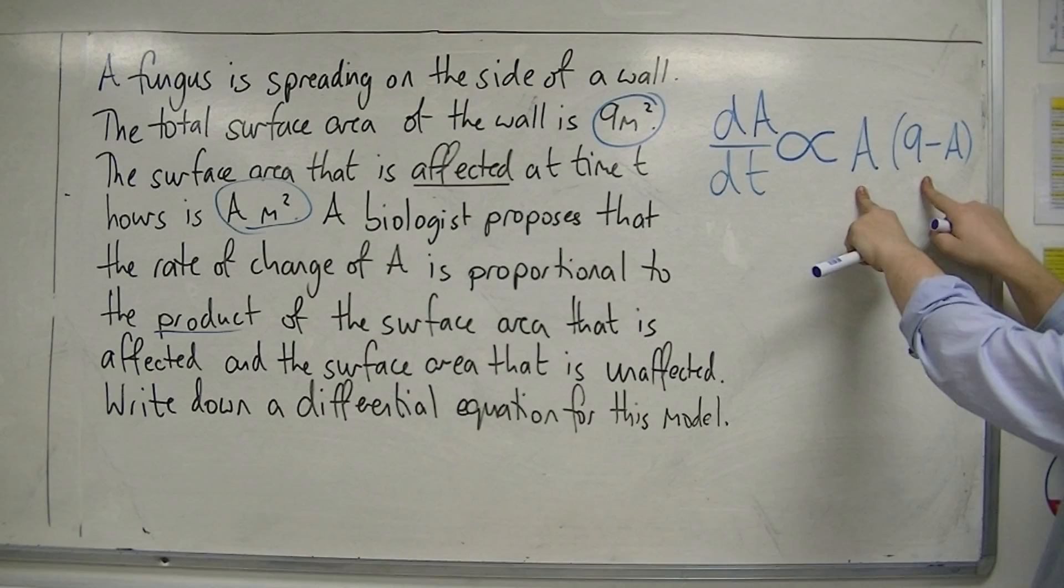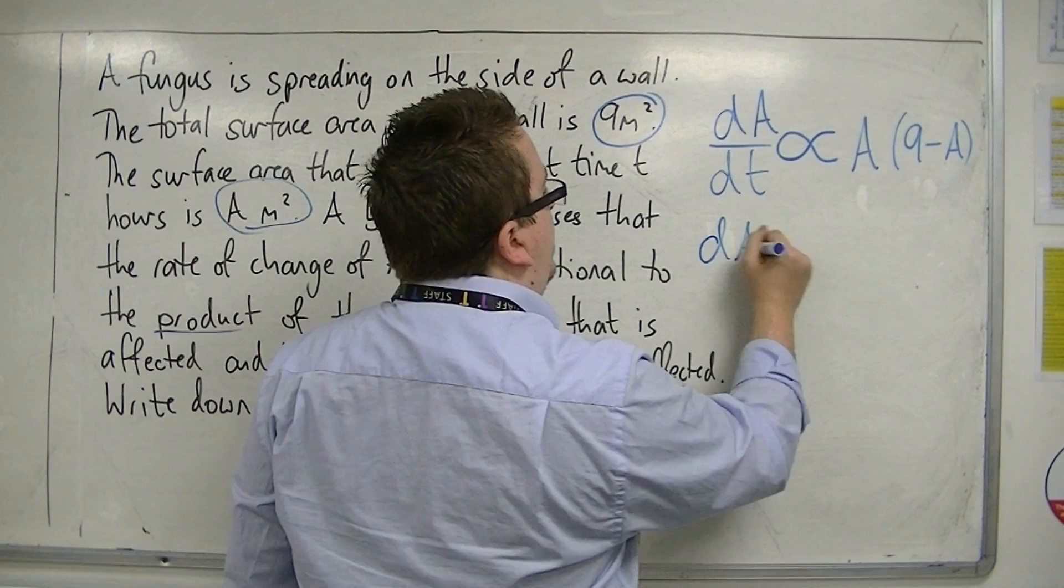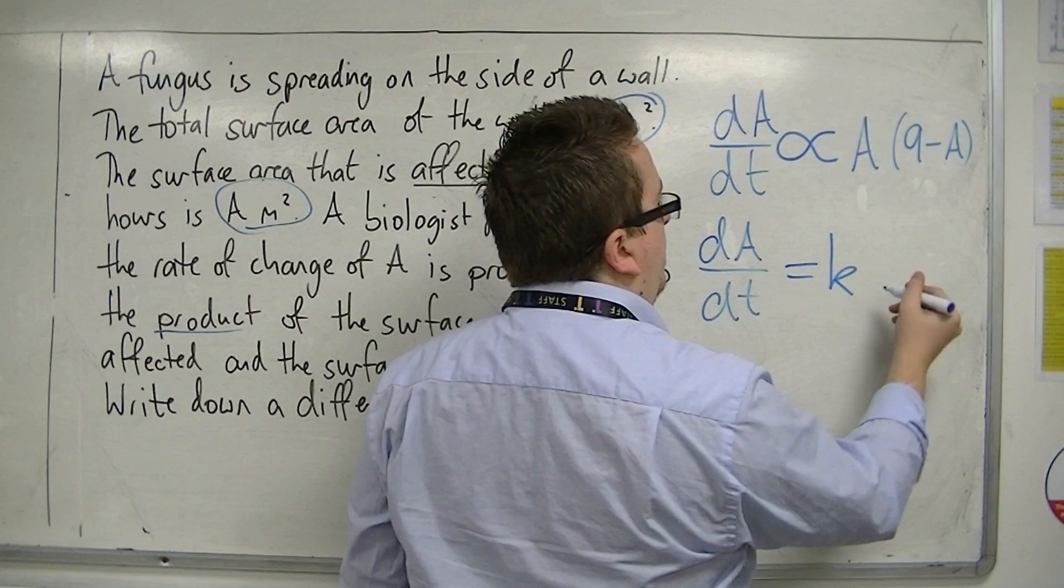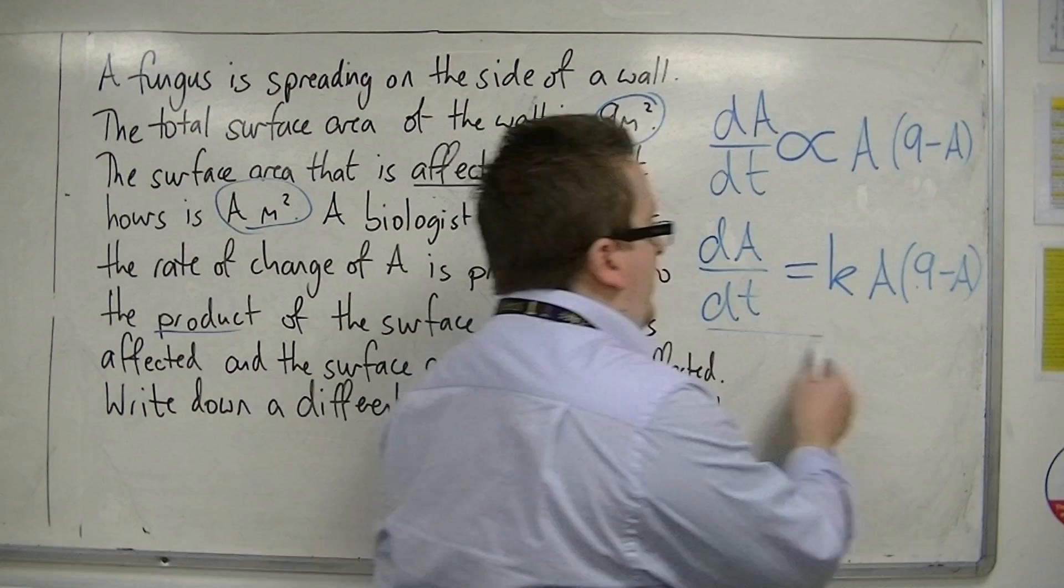So that's all well and good, but that's not a differential equation. So what we do is we replace the proportionality symbol. We're saying that means that dA by dt will be equal to some multiple k of A times 9 minus A. And that is how we set up the differential equation that we want.